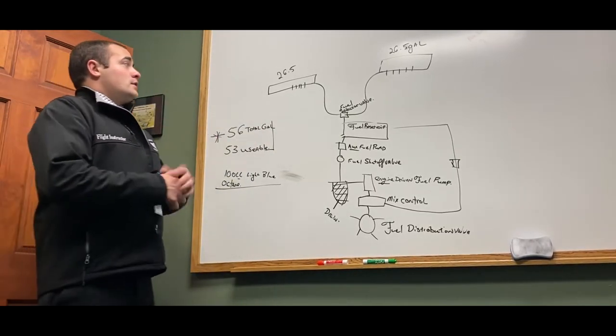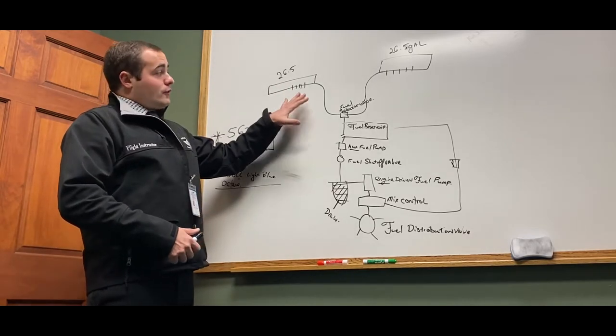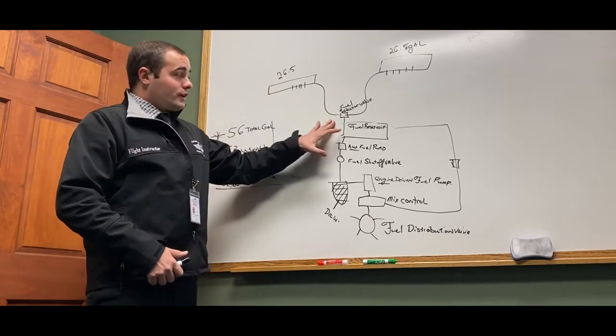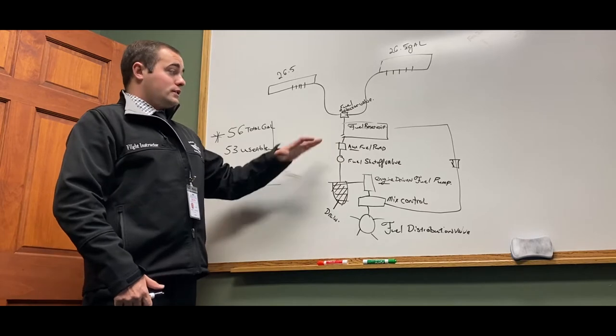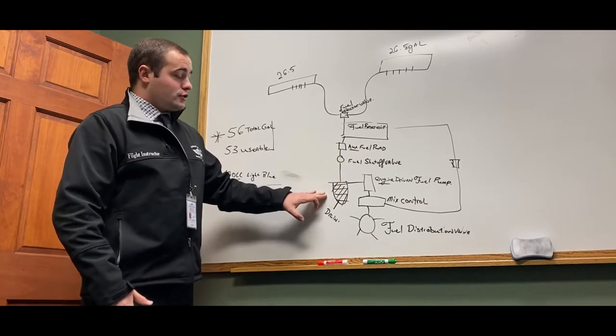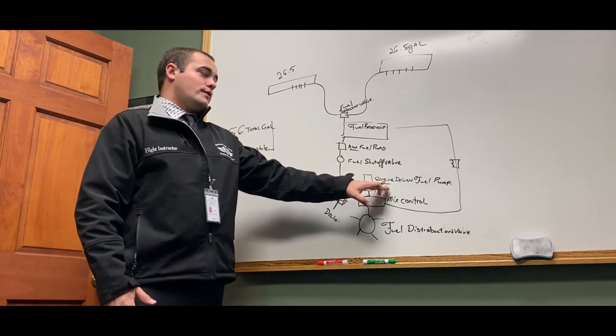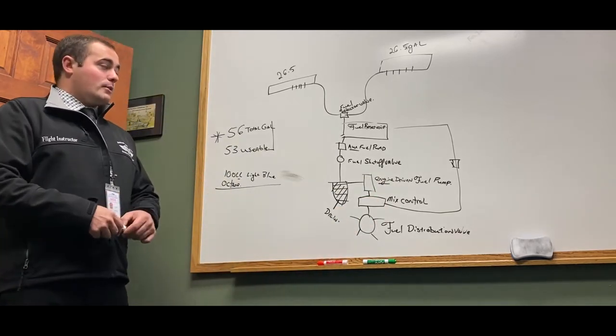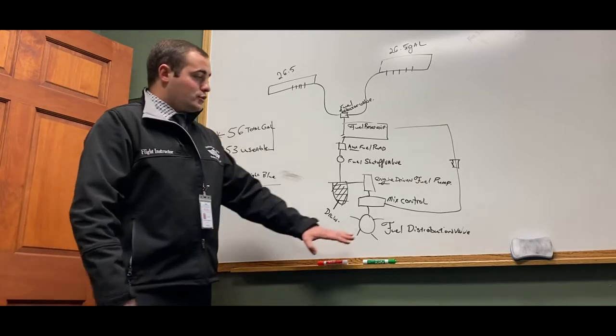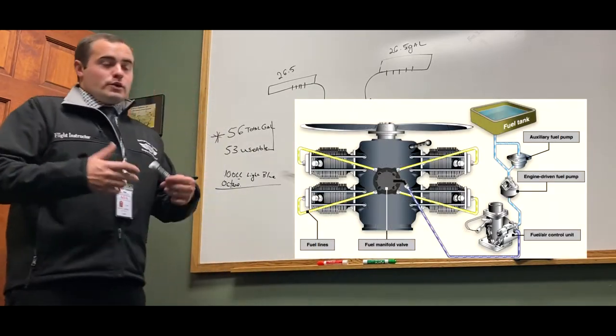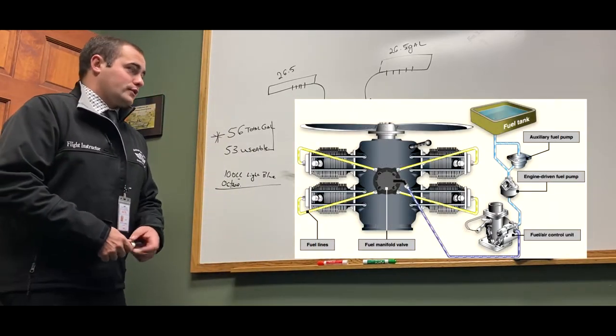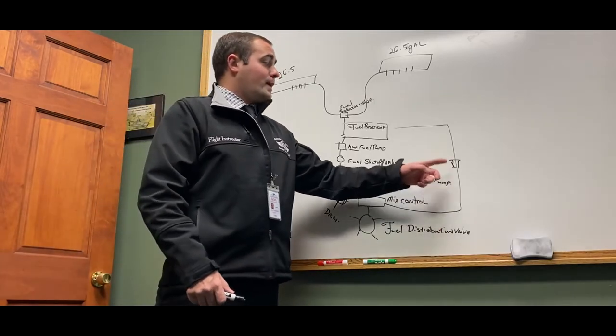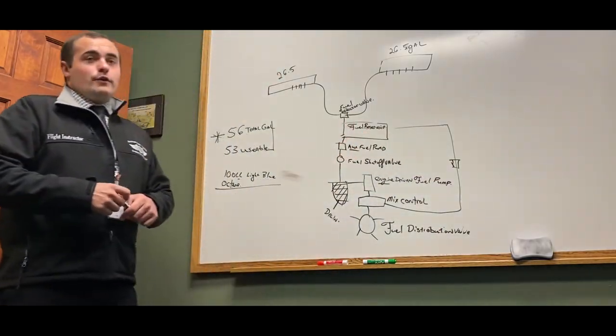Speaking of our Cessna, it comes down gravity fed to the fuel selector valve, the fuel reservoir, the auxiliary fuel pump, the fuel shutoff valve, down to the strainer, and then we have our engine driven fuel pump which goes to our mixture control where we can regulate how much fuel we're putting in the engine. That goes into our fuel distribution valve which distributes it to the fuel injectors. The extra fuel travels back up through a check valve into the fuel reservoir.